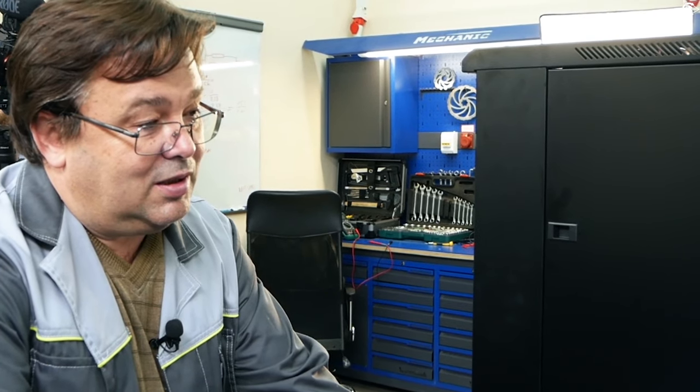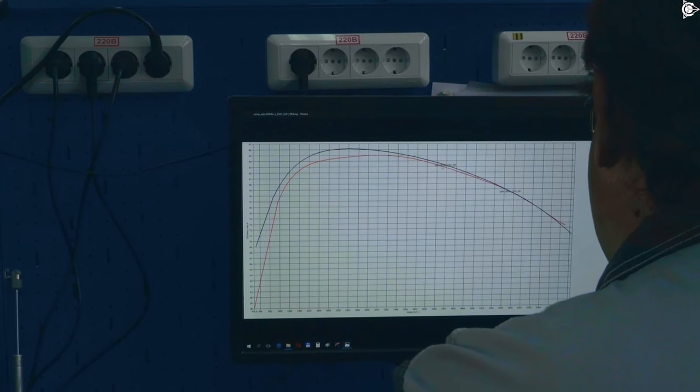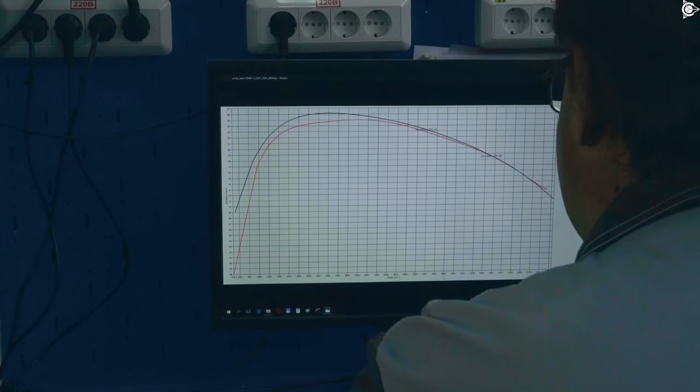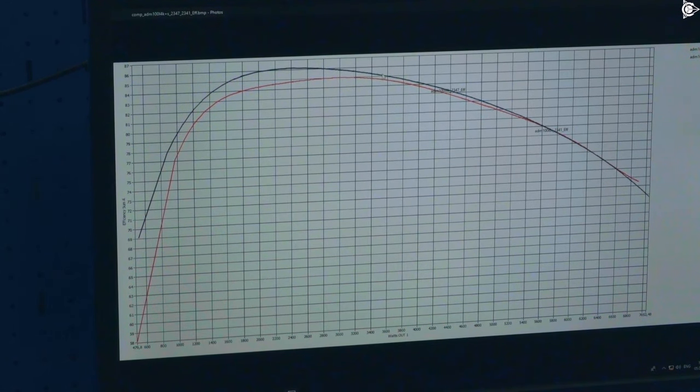So this is a graph for a Slavyanka with less copper. This is the efficiency power. Consequently, we can see that the efficiency is 0.5% lower.